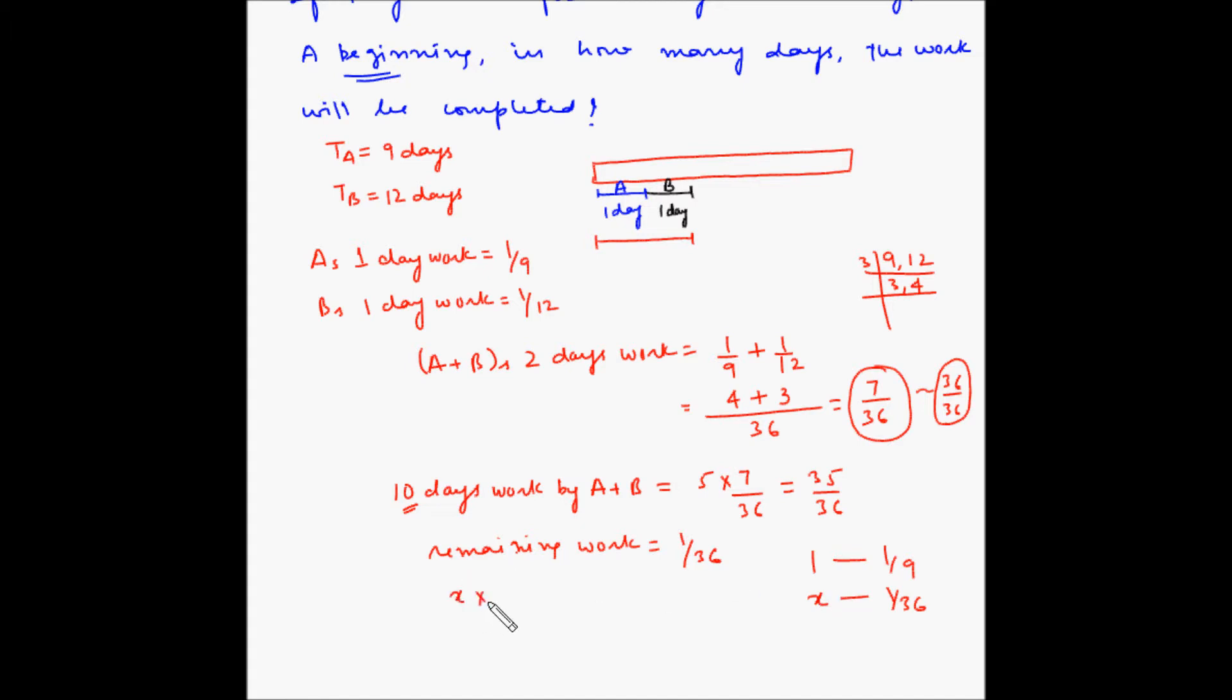So x multiplied by 1/9 is equal to 1/36, or x is equal to 9/36. Nine fours are 36, or x is equal to 1/4.